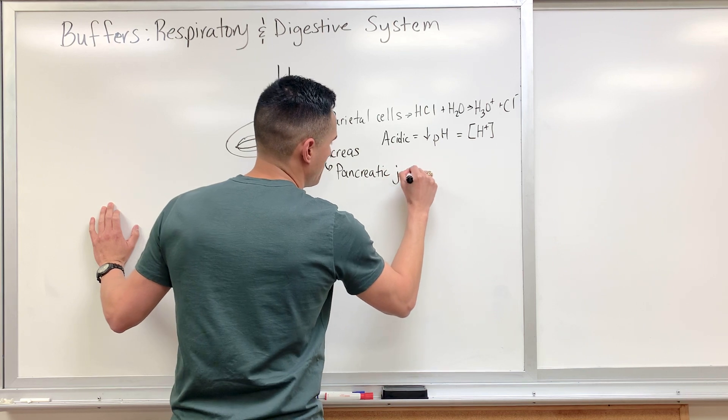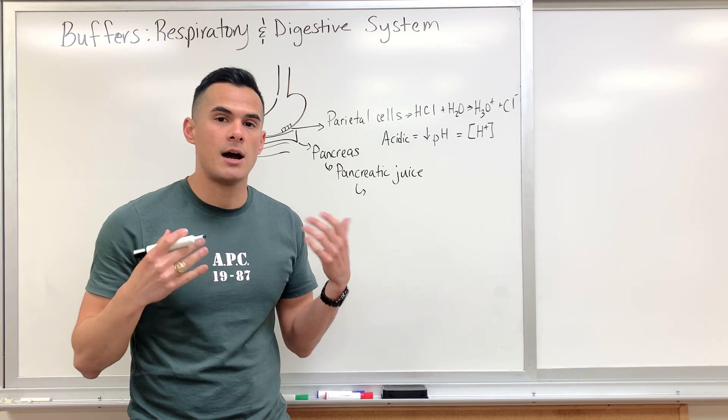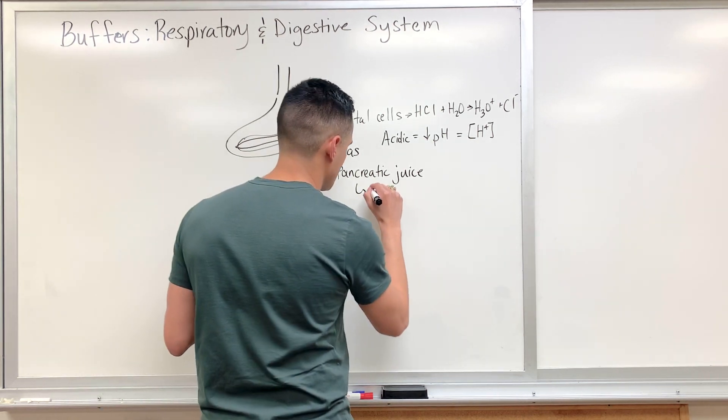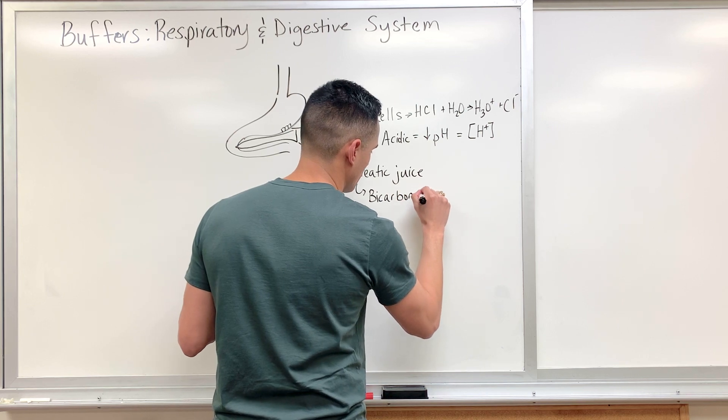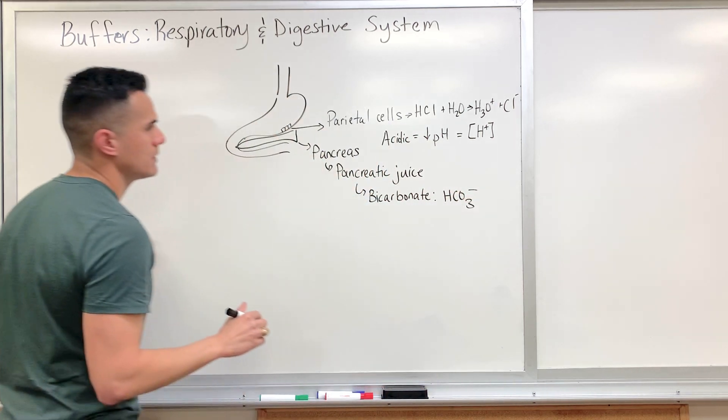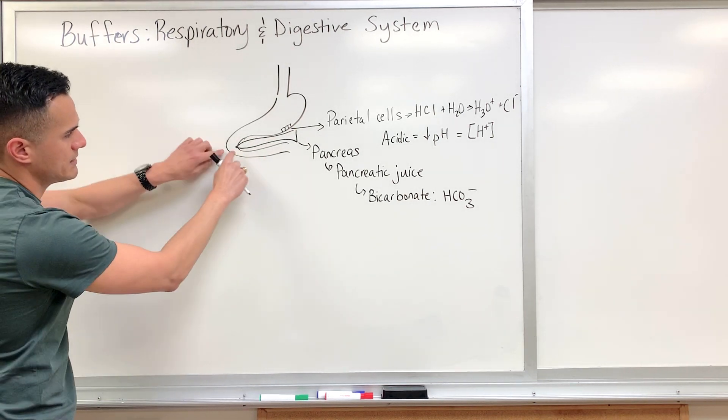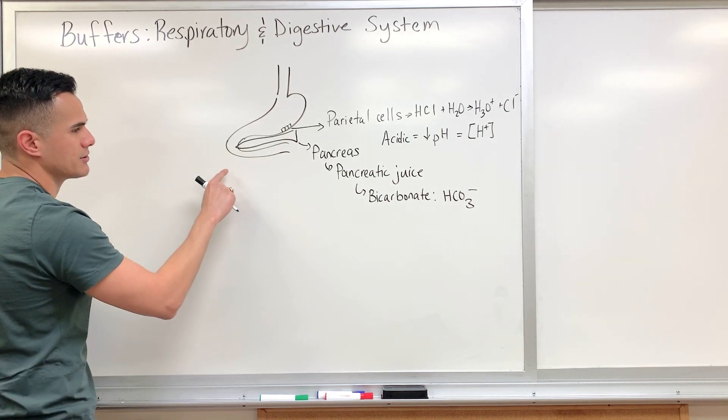This pancreatic juice contains a negatively charged ion known as bicarbonate. So when this acidic chyme gets here into the duodenum, the pancreas secretes the pancreatic juice,